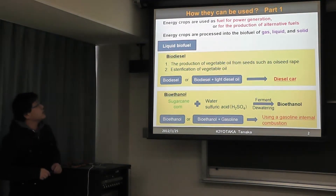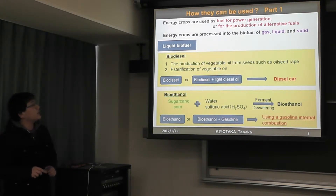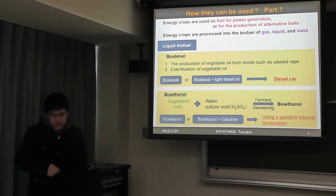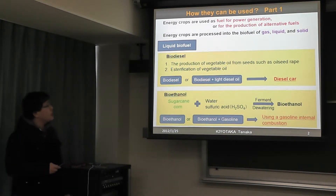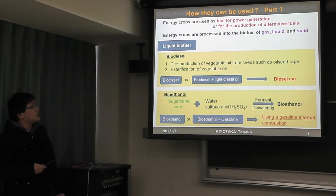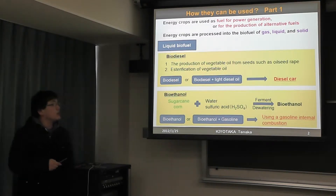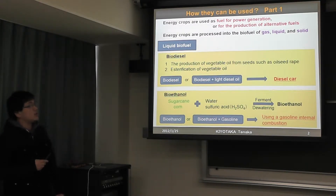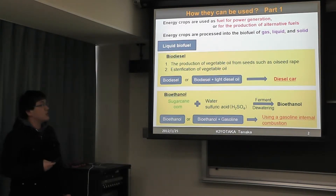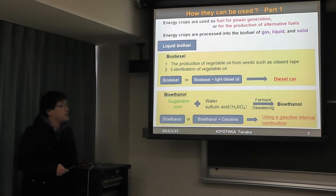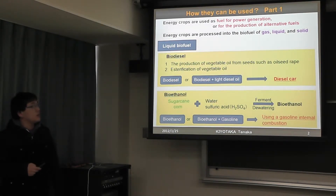Part one covers two types of liquid bio-fuel: bio-diesel and bio-ethanol. Bio-diesel is produced by processing vegetable oil from seeds such as oilseed rape. Bio-diesel, or a mixture of bio-diesel and light diesel oil, is used in diesel engines.